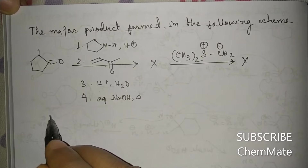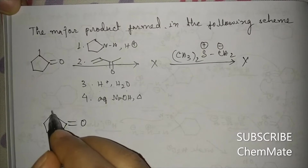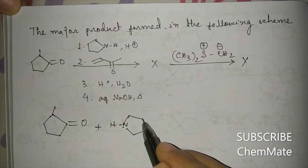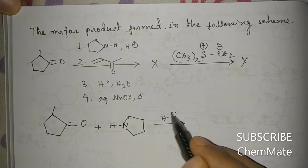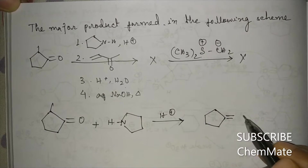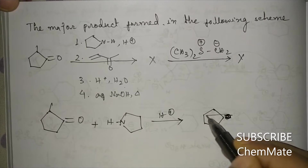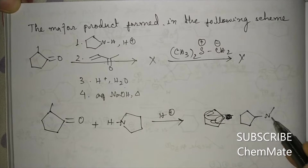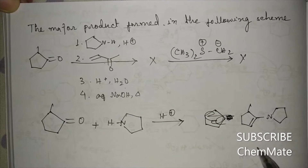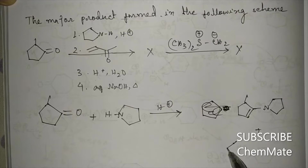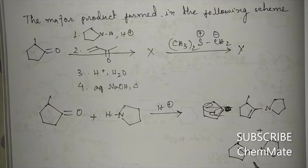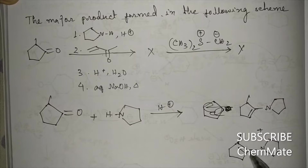First, the ketone reacts with a secondary amine in acid medium to form an enamine. Now, two types of enamine may be formed — the double bond may be here or here. What will be the major product?